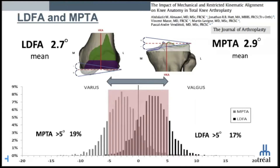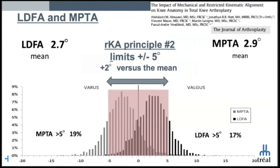If we look at patient anatomy in more detail, we observe that the mean lateral distal femoral angle (LDFA) and the medial proximal tibial angle (MPTA) are approximately 3 degrees. There were also around 20% of patients with these values above 5 degrees. As a second RKA principle, I suggest limiting the LDFA and MPTA, which create joint obliquity, to a maximum of 5 degrees.